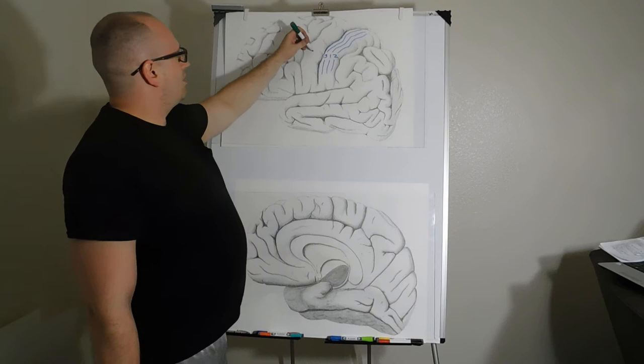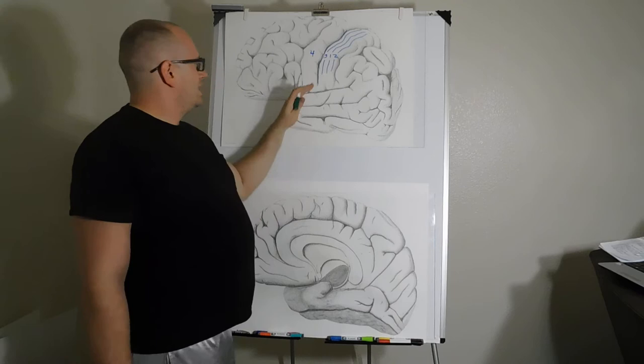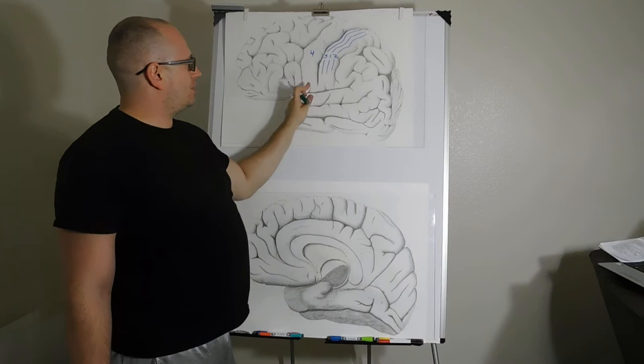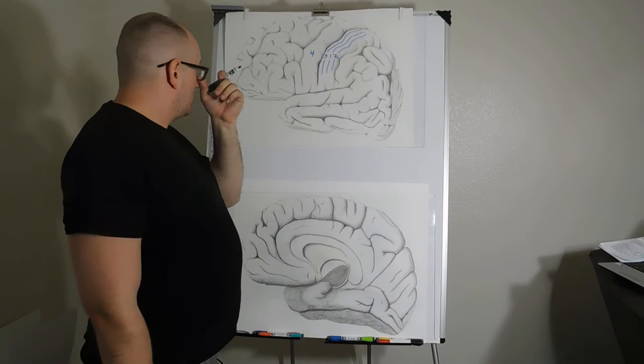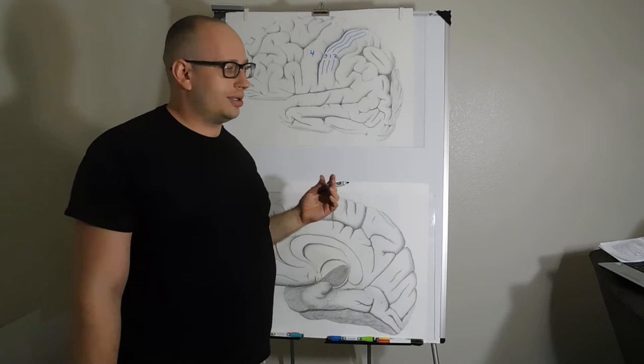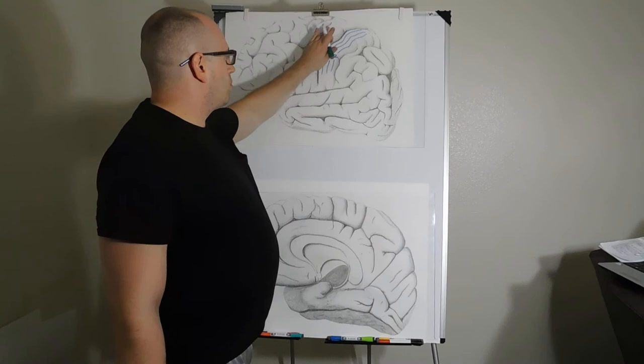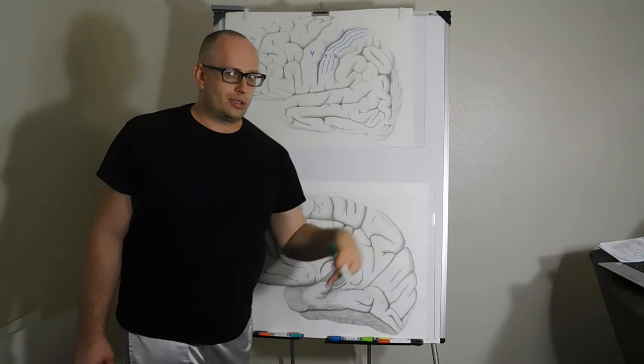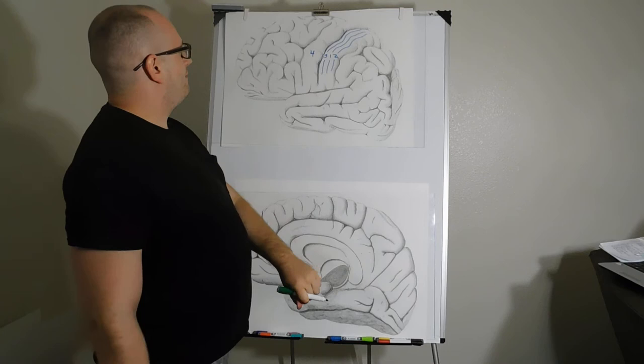Brodmann area 4 is the primary motor cortex in the pre-central gyrus, rostral to the central sulcus. This area contains your upper motor neurons that can sometimes control multiple muscles — it's more geared toward functionality rather than one neuron to one muscle fiber.